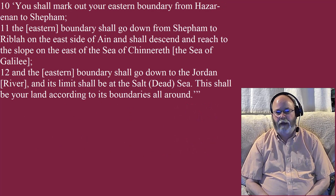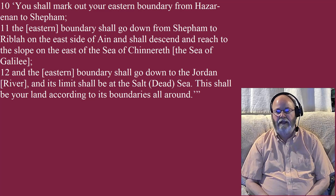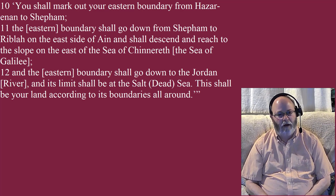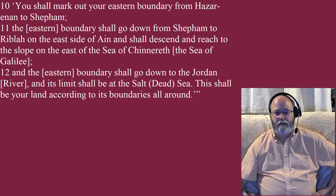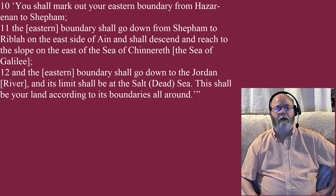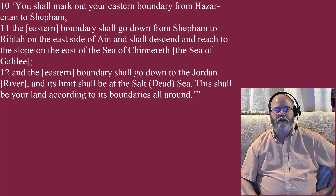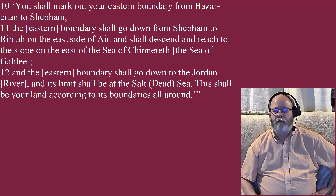You shall mark out your eastern boundary from Hazar Enon to Shephem. The eastern boundary shall go down from Shephem to Riblah, on the east side of Aen, and shall descend and reach to the slope of the east of the Sea of Chinnereth, the Sea of Galilee. And the eastern boundary shall go down to the river Jordan, and its limit shall be at the Salt Dead Sea. This shall be your land according to its boundaries all around.